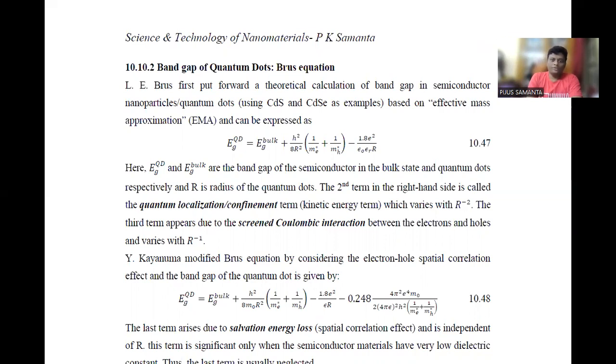Brus was the first to make theoretical calculations connecting the particle size or radius of the quantum dots with the band gap. He used an effective mass approximation for this purpose and considered both the quantum confinement effect and Coulomb charge interaction.